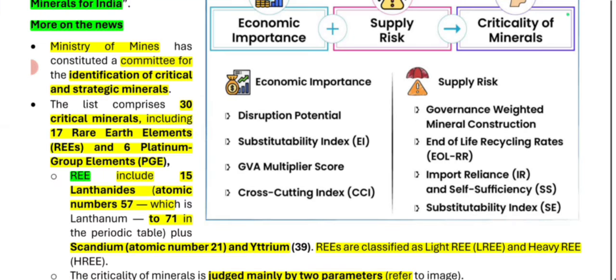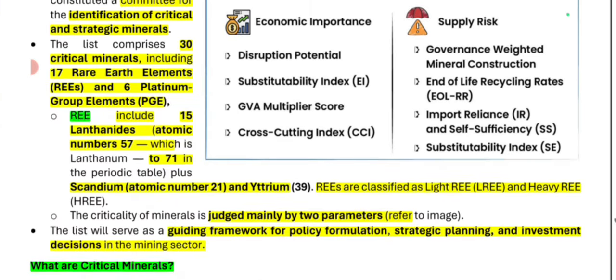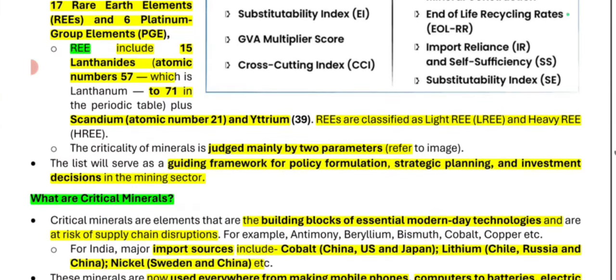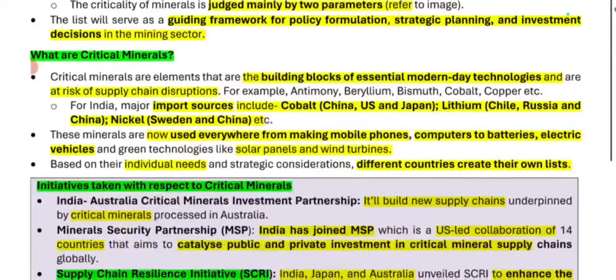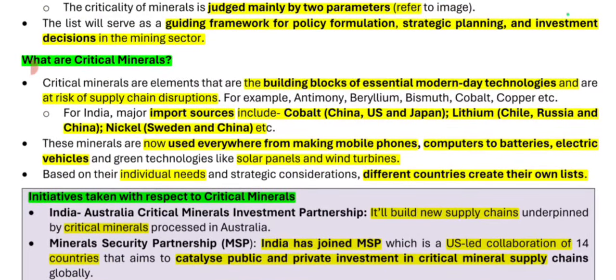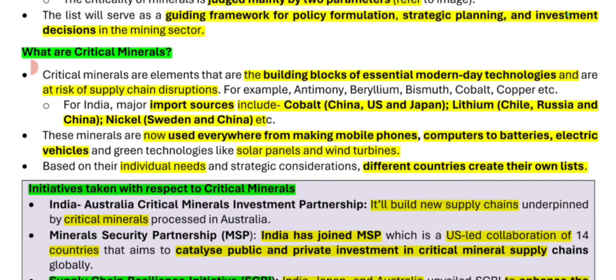Rare earth elements include the 15 lanthanides from atomic numbers 57 to 71, plus scandium with atomic number 21, and yttrium with atomic number 39. Rare earth minerals are classified into two categories: light rare earth elements and heavy rare earth elements.